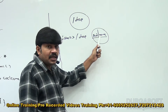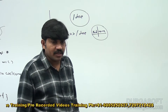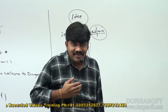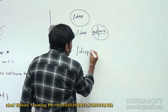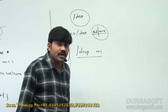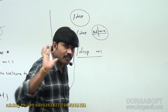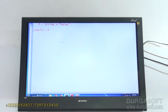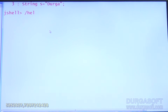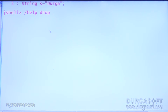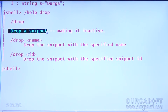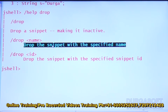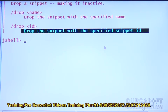From the JShell, the slash drop command can specify either an ID or a name. The drop command drops snippets based on ID or based on name. Suppose my requirement is to drop the m1 method declaration — I use slash drop m1, then automatically the m1 snippet will be dropped. The slash help drop command explains: drop makes a snippet inactive, by either name or snippet ID.